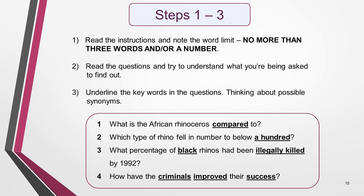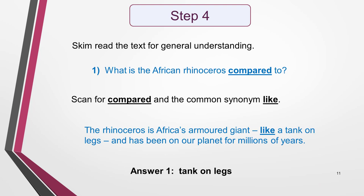I start by reading the instructions and noting that the word limit for each answer is no more than three words and/or a number. I then read the questions and try to understand what I'm being asked to find out. Next, I underline the key words in the questions, thinking about possible synonyms as I do so. I then skim read the text to get a general understanding of what it's about, keeping a look out for the key words I've selected. Once I've done this, I'm ready to search the text for the answers. Since the answers will be in order, I work through the list of questions one by one. The key word I've chosen to scan for in question one is 'compared'. I didn't select the perhaps more obvious 'African rhinoceros', because I know from the title of the passage that the whole text is about African rhinos. Each of the questions is asking about something specific about the rhinos, so I need to pick keywords that will lead me to that subject matter.